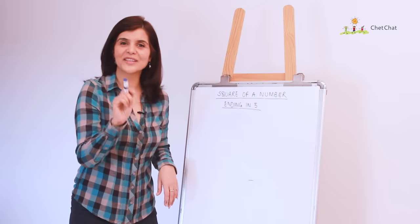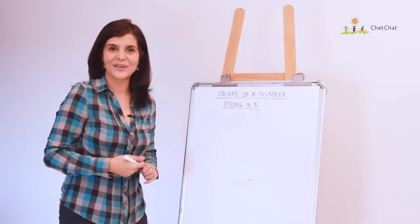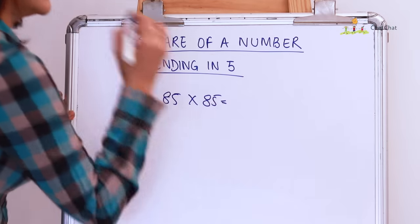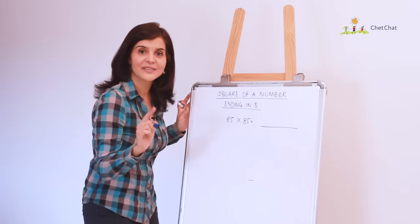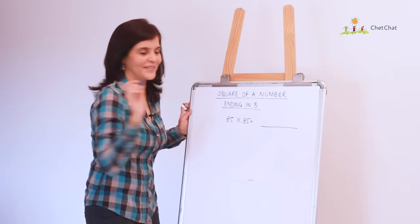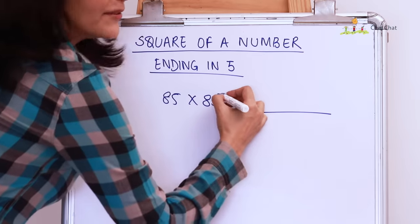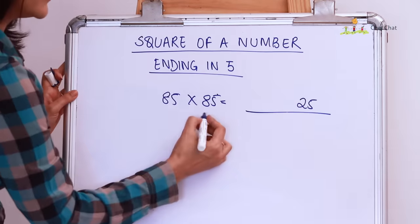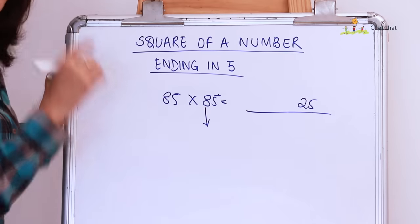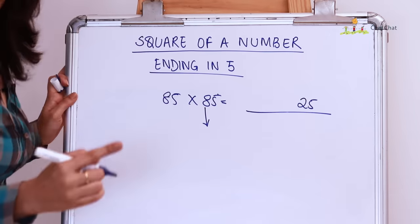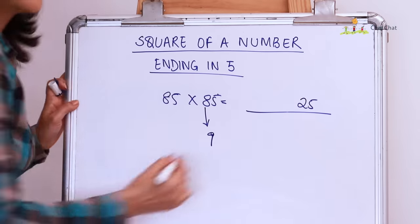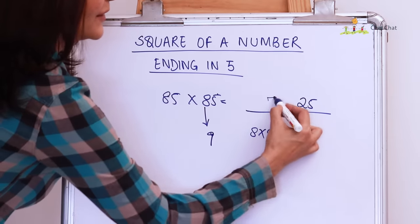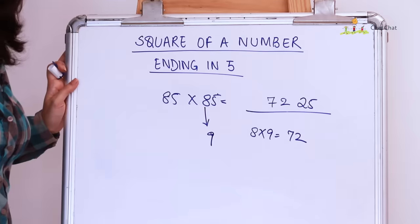Did you get 7225? If you didn't, here's how we got it. So, 85 into 85. Now, the last two digits will always be 25. The square of 5 is 25. And the first two digits will be 8 into the number that comes after 8 which is 9. So, 8 into 9 is 72. And you've got 7225.